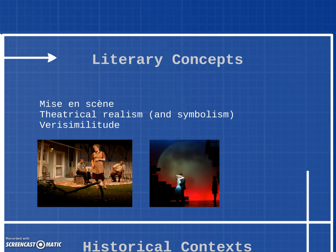Mise-en-scène refers to the design aspects of theater or film production. It basically means the visual theme of a production — this includes things like set design, lighting, space, composition, costume, makeup and hair, acting, and actors. Everything that you see when you watch a play is all part of the mise-en-scène. You can impress people by using this term whenever you're talking about theater or film.